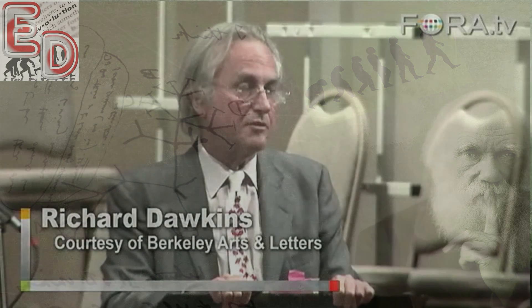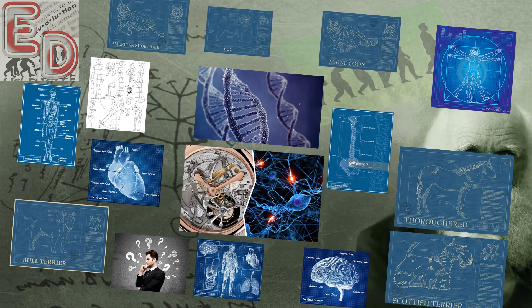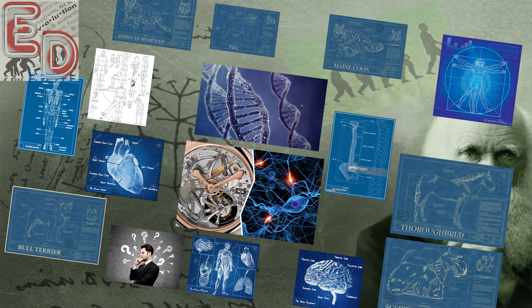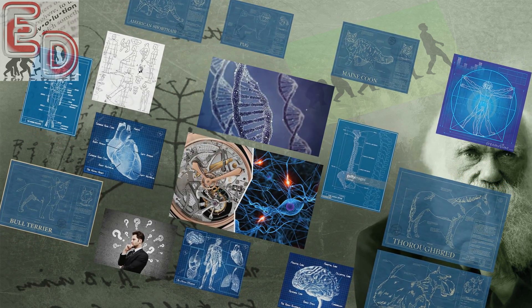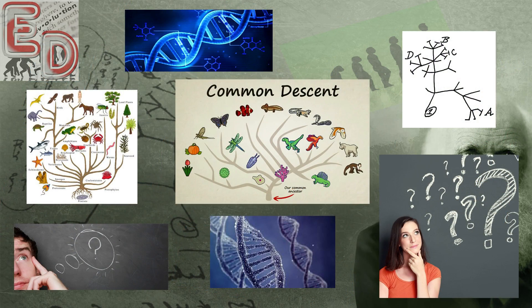Let's get back to Dawkins. And the only alternative to it being a family tree is that the intelligent designer deliberately set out to deceive us in the most underhand and devious manner.